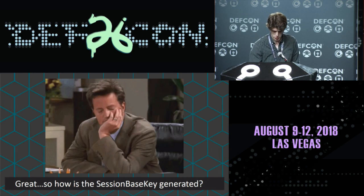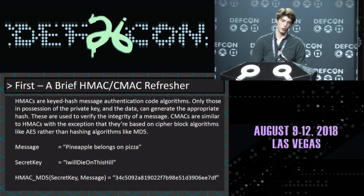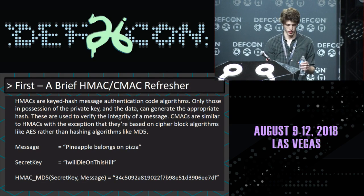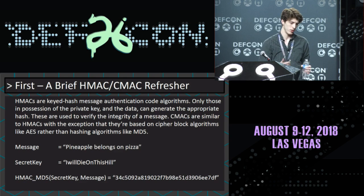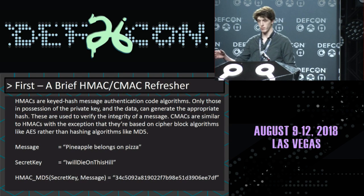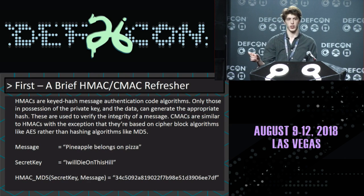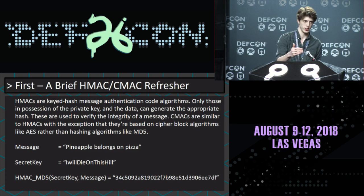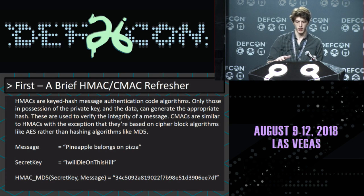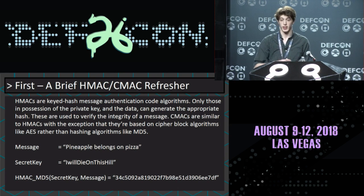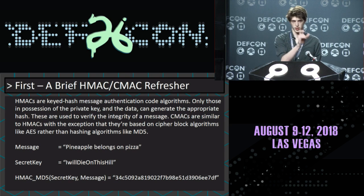Let's get down to how the keys are actually generated. We need to know what HMACs and CMACs are first. In a nutshell, they are message authentication code algorithms. Think of them like a salt: you have a message, you hash that message, but while hashing it, you include a secret value. Only those who know that secret value can recreate the same hash. In HMAC or CMAC, the underlying protocol may vary — some use AES, some use SHA-256 — but the goal is to hash the message along with some secret information.